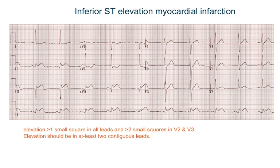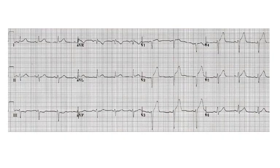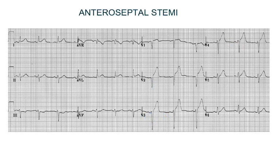Contiguous leads means two leads that represent the same area of the heart. For example, in this ECG you see ST elevation in lead 2, lead 3, and lead AVF — so this is inferior ST elevation MI. In this other ECG, the ST elevation is in leads V2, V3, and V4, so this is anteroseptal ST elevation MI.